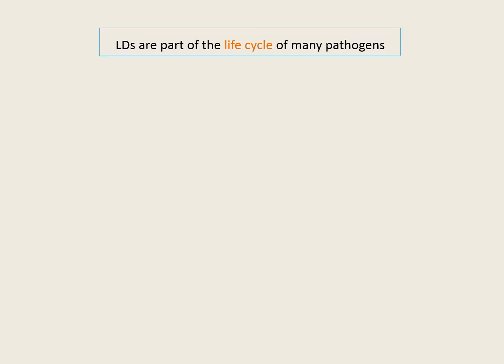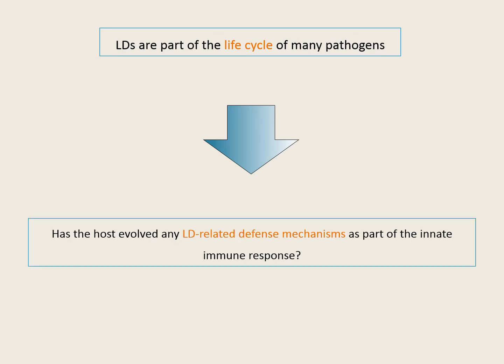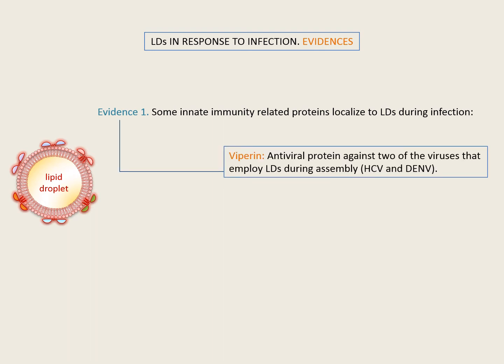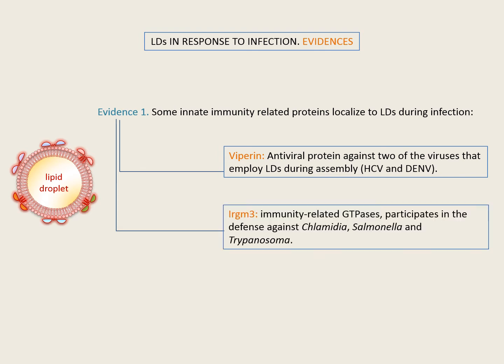If lipid droplets are part of the life cycle of many pathogens, our working hypothesis was whether the host has evolved any lipid droplet-related defense mechanism as part of the immune response. There are some evidences that lipid droplets actively participate in the response against invaders. Some innate immunity-related proteins localize to lipid droplets during infection, like viperin, an antiviral protein with activity against hepatitis C virus and dengue virus, and IGTP, an immunity-related GTPase required for resistance to Toxoplasma gondii.